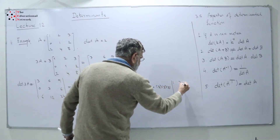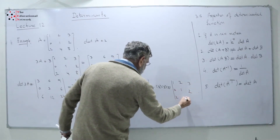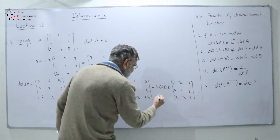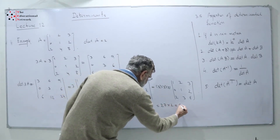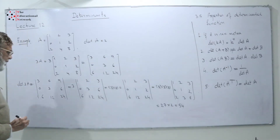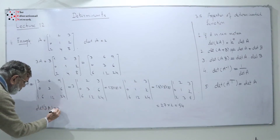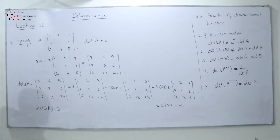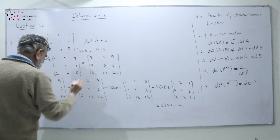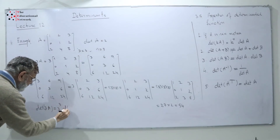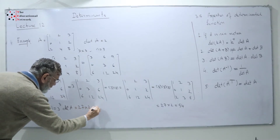I take 3 common from the third row, getting 3 times 3 times 3 times the matrix with rows 1, 2, 3; then 0, 1, 2; then 2, 4, 8. My result is 3 times 3 times 3 is 27, multiplied by determinant of A which is 2, giving 54. Applying the formula, determinant of 3A equals 3 to the power 3 times determinant of A, which is 27 times 2 equal to 54.